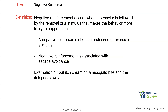Negative reinforcement — a little more tricky sometimes. It is a consequence that follows a behavior, and it's the removal of the stimulus that makes the behavior more likely to happen again. So we have antecedent, behavior, consequence — removal that increases behavior. A negative reinforcer is often undesired or aversive, and since typically negative reinforcers are undesired or aversive, it's associated with escape avoidance. Think about when you give a worksheet to a client and that client falls on the floor.